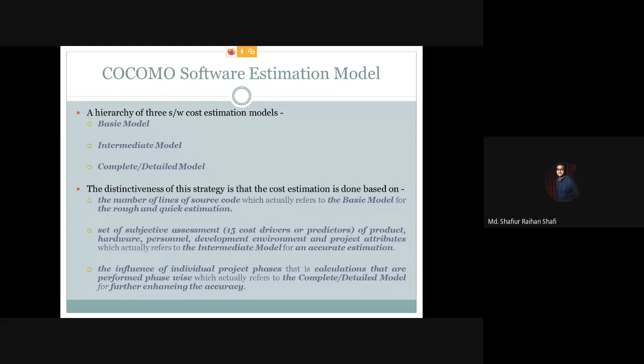Basically, what is the hierarchy? At first, the cost estimation is done based on the number of lines of source code, which is KLOC or KDLOC — that refers to the basic model. The basic model is based on the software size in KLOC or KDLOC, and provides a rough and quick estimation.